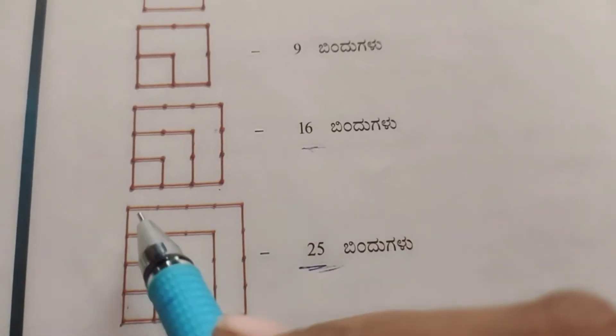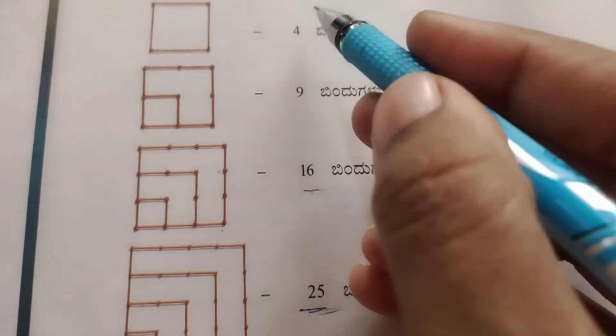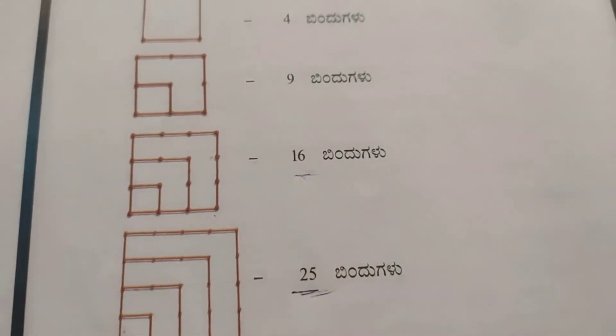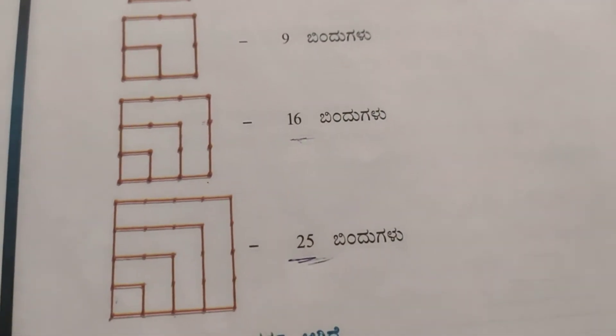Look at the shape they are arranged in — square shape. So 4, 9, 16, 25 are square numbers.